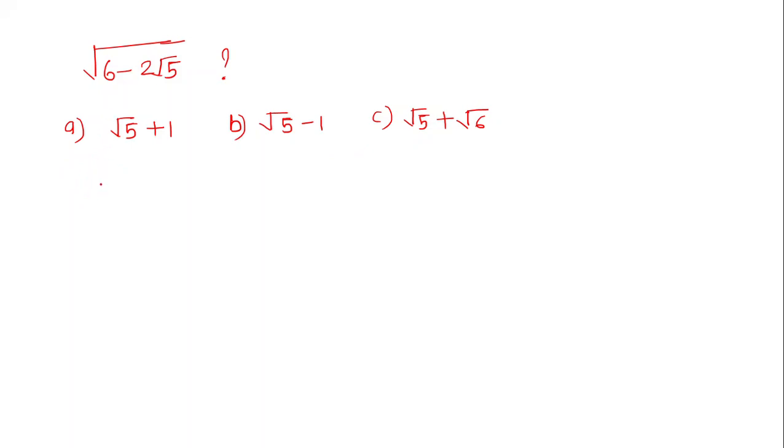For this problem, we will use one algebra formula: a² - 2ab + b² = (a - b)².